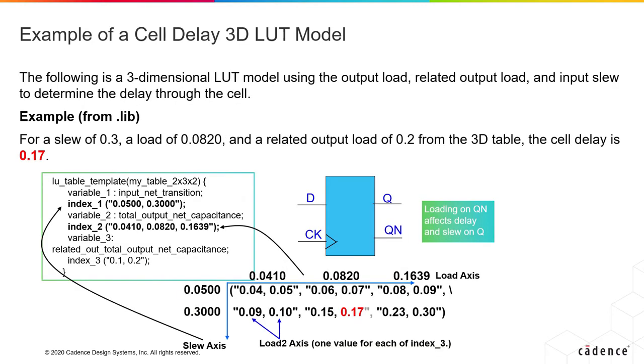In a 3D lookup table model, you also have the related output load as seen by QN. This illustration shows the slew axis, the load axis, and load 2 axis. For this lookup table, the related output load has two values. Once you locate the slew and load axis, for the third axis we use load 2, and thus calculate the delay based on load 2.